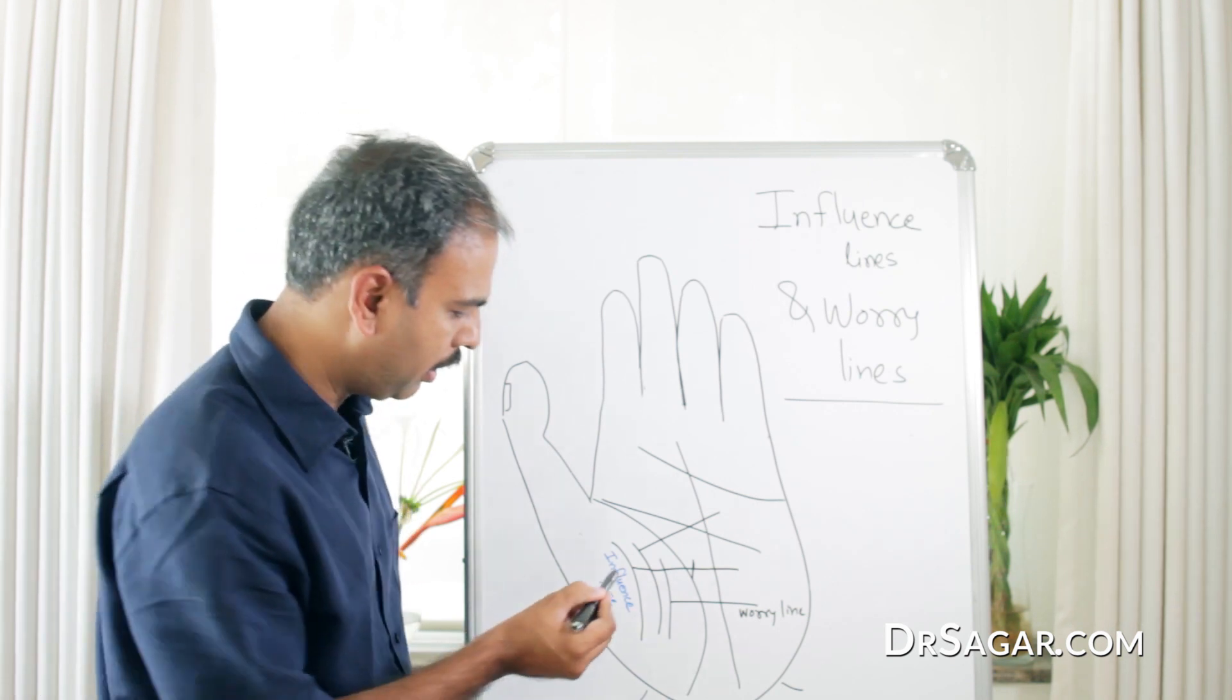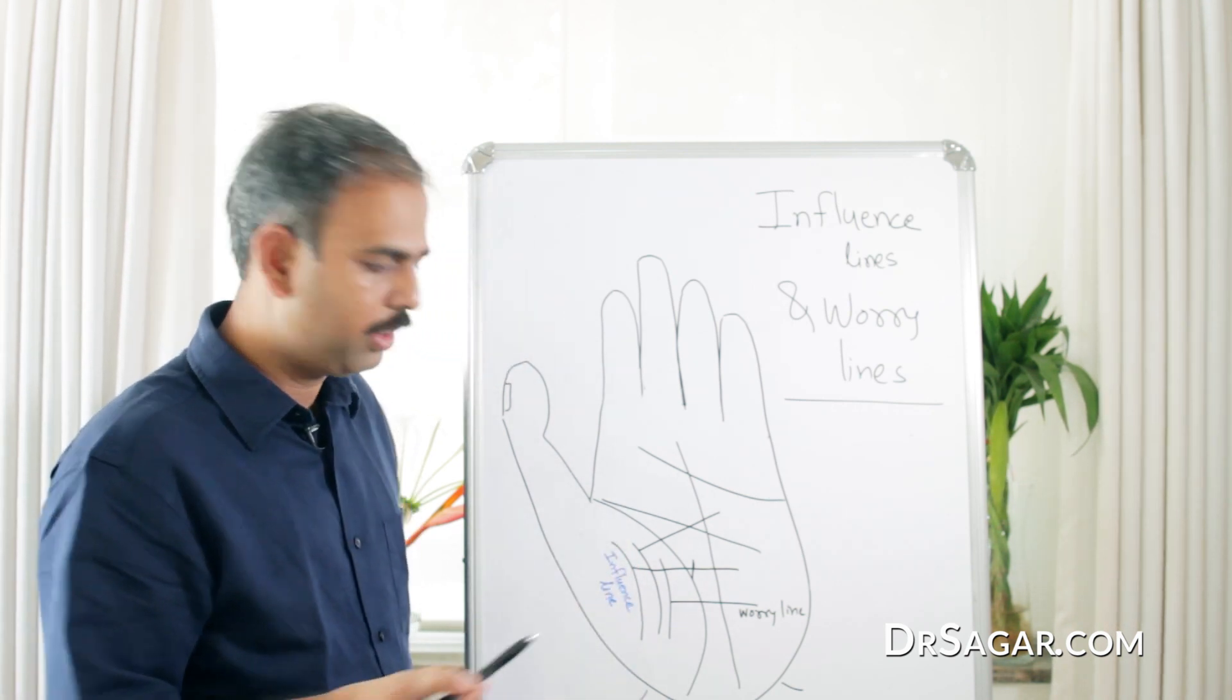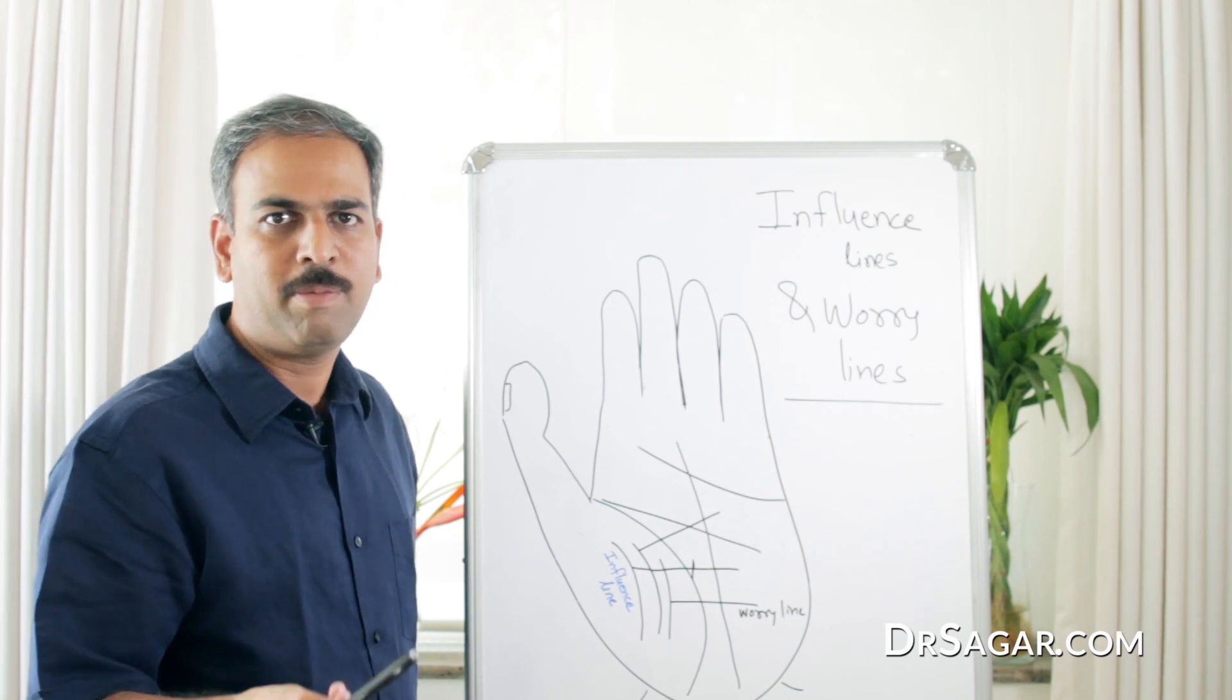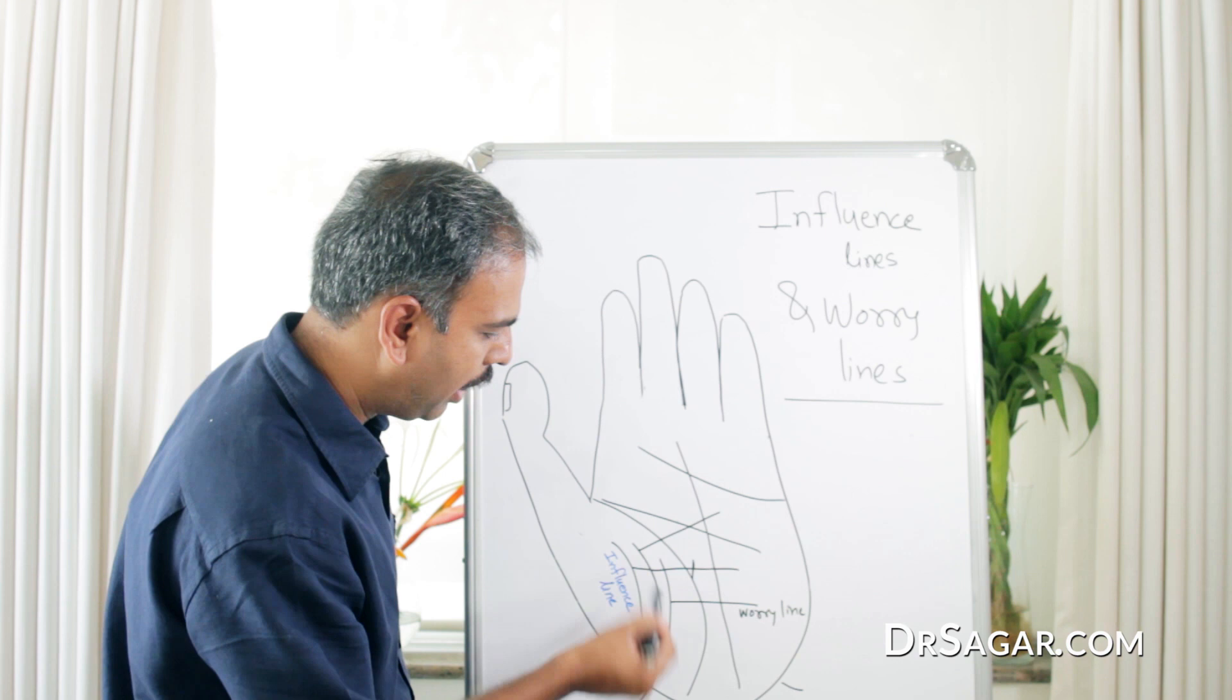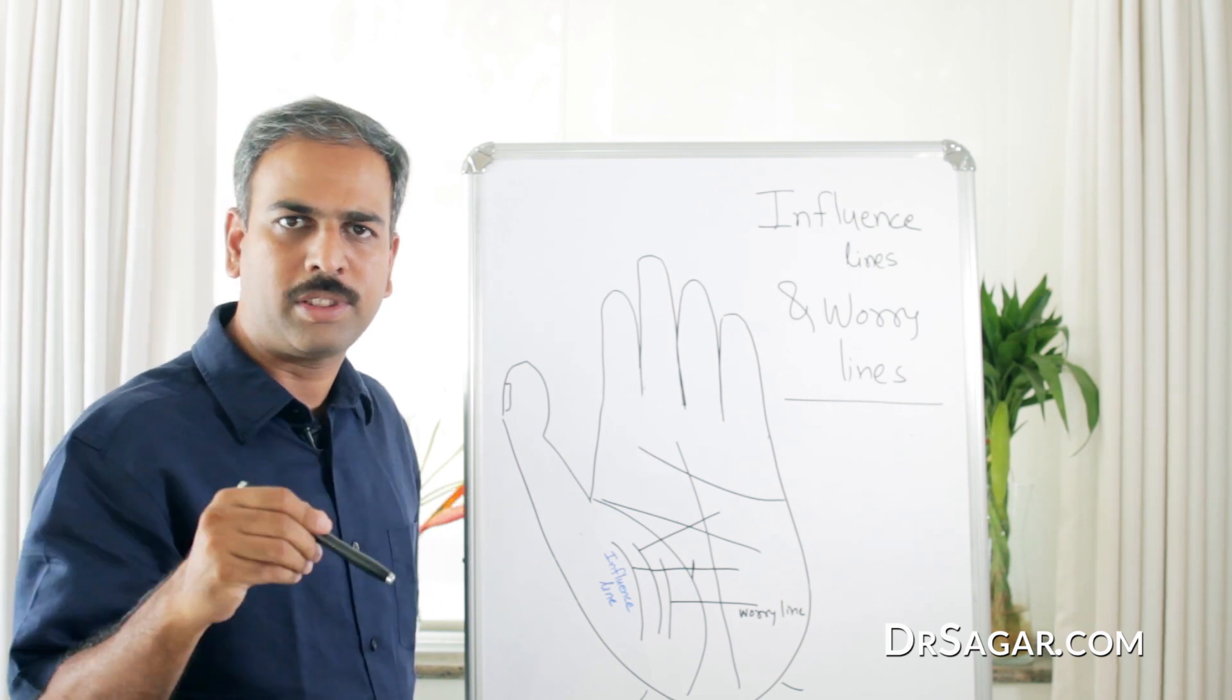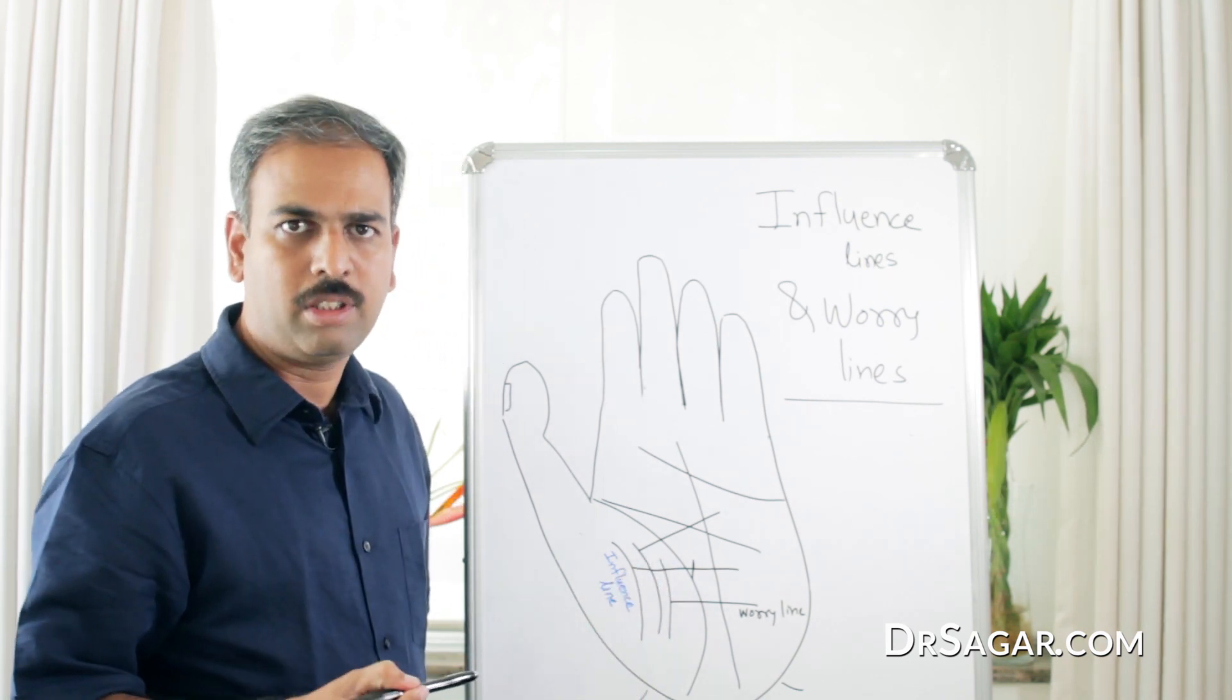Like we can say, this is the Influence Line of a friend. And this line, very near to the Life Line, is the influence of mother or wife. So, according to the relation of a person to the number of persons, these are Influence Lines.